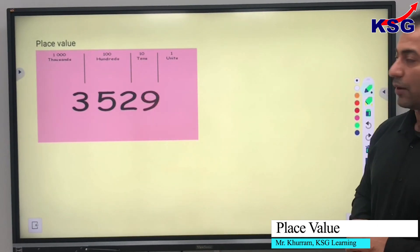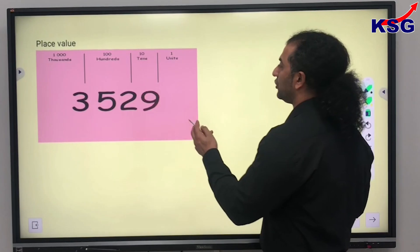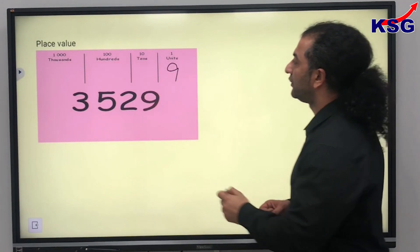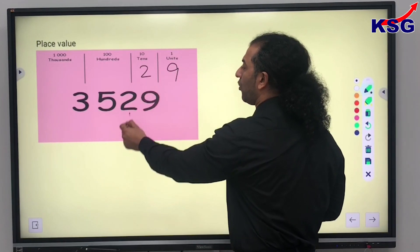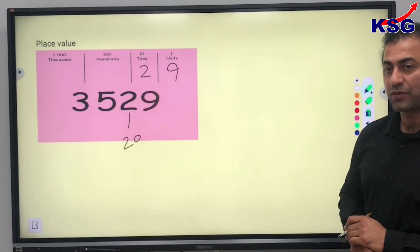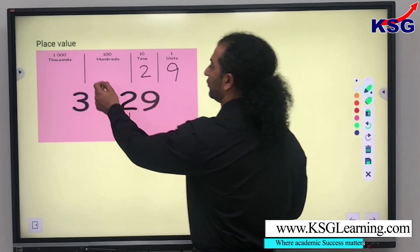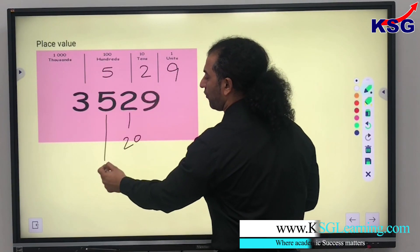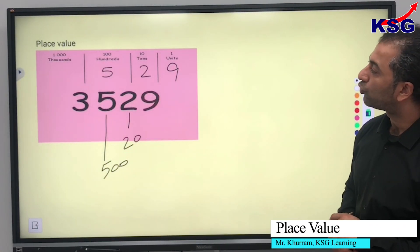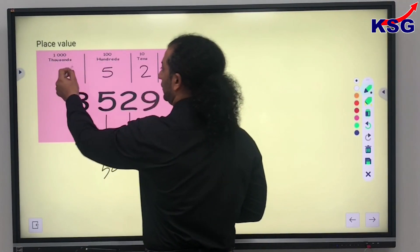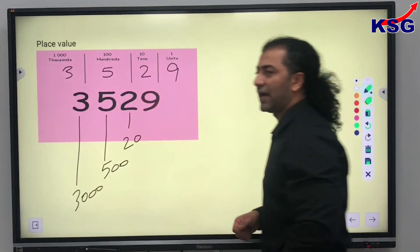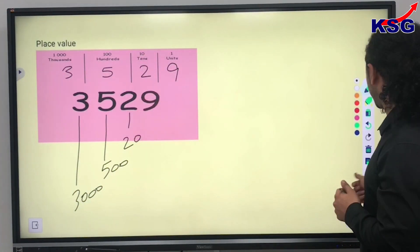In this number, 9 represents unit value. 2 represents tens, so the value of 2 is 20. 5 represents hundreds value, so the value of 5 is 500 in this number. 3 represents 1000, so the value of 3 is 3000 in this number.